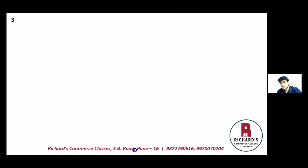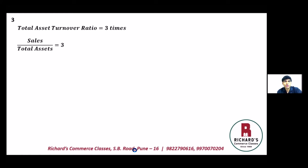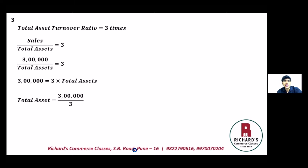Now we use the formula for total asset turnover. The formula is sales divided by total assets equals 3. Sales is three lakhs, so three lakhs divided by total assets equals 3. Cross-multiplying, total assets equals three lakhs divided by 3, which is one lakh rupees.